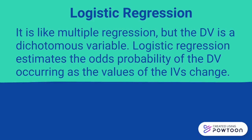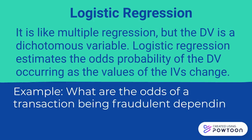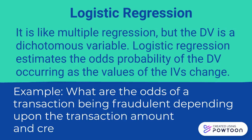The last test is logistic regression. It is like multiple regression, but the dependent variable is a dichotomous variable. Logistic regression estimates the odds probability of the dependent variable occurring as the values of the independent variables change. For example, what are the odds of a transaction being fraudulent depending upon the transaction amount and credit score impact?